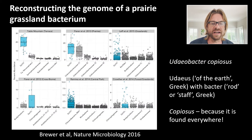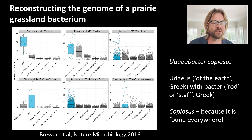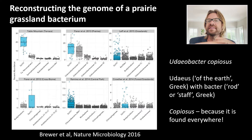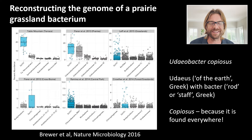Interestingly, working with Noah and his team, we were able to assemble a genome from this metagenomic data — a metagenome-assembled genome — back from 2016. We then mapped metagenomic reads from datasets and soils all over the world to this genome to determine what environments this organism was associated with. We named this organism Eudaibacter copiosus — Eudaius meaning 'of the earth,' and copious meaning it's found everywhere.